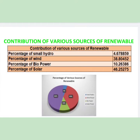Now it's time to talk about the contribution of various sources of renewable energy. If you look at that table and pie chart, small hydro contributes 4.6%, wind contributes 38.8%, biopower 10.26%, and the percentage of solar — a very good figure — is 46.25%.